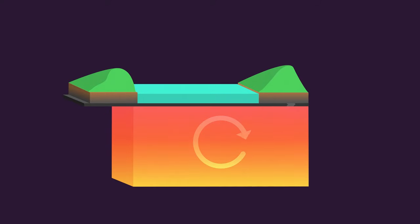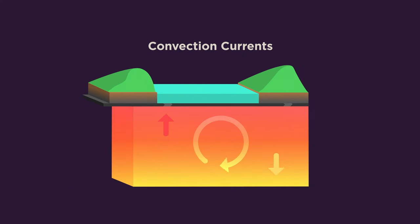This movement is caused by convection currents. The cooler mantle near the surface is more dense, so sinks towards the iron core, driving hotter, less dense mantle towards the surface. The Earth's crust rides on these slow-moving convection currents.